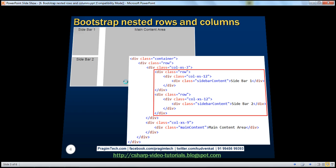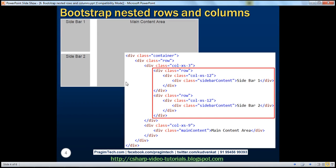Let's now look at the HTML required. Within our layout we want a single row, so within our container we have a single row, and within that single row we need two columns. The first column is three logical units wide and the second column is nine logical units wide. When we add those two numbers together we get 12. Within our second column we have a div where we have set the class to main content.